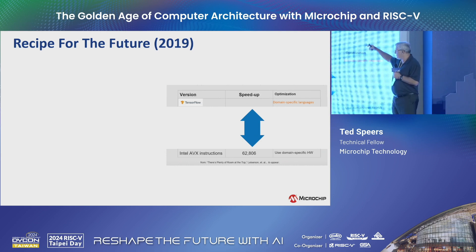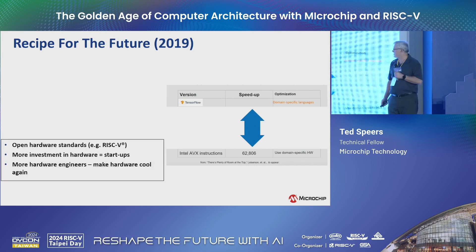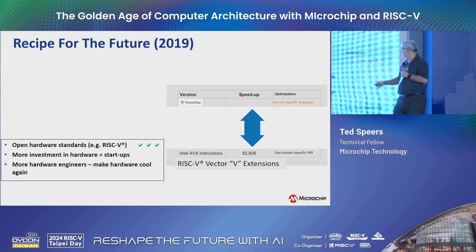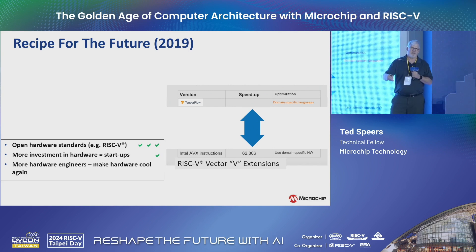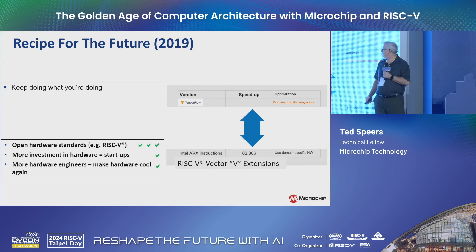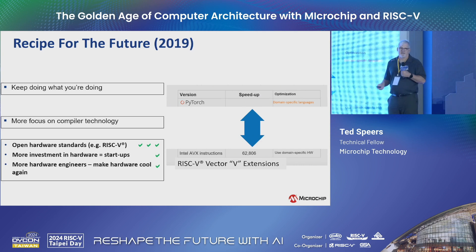I said what is needed: open hardware standards, more investment in hardware startups, more hardware engineers — make hardware cool again. How are we doing? Well, RISC-V is doing great, and we have our own vector extensions comparable to AVX. There are a lot of startups here — I think you can't have a startup today that's ARM-based; it has to be RISC-V based. Make hardware cool again — I think we're getting there. Hardware companies are now outperforming software companies on the stock market.